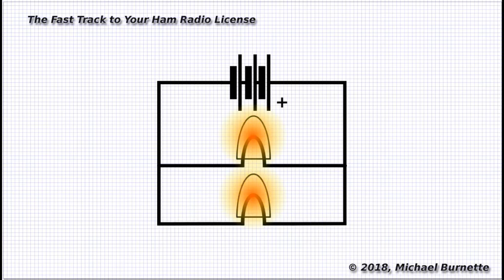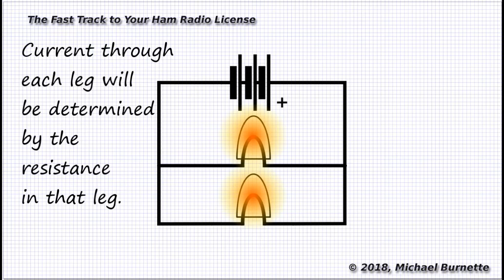If the bulbs are identical in resistance, half of the current will flow through the top bulb, and half will flow through the bottom. So now, not all the points in the circuit have the same current. How much current goes through each path will depend on the values of the components in that path.